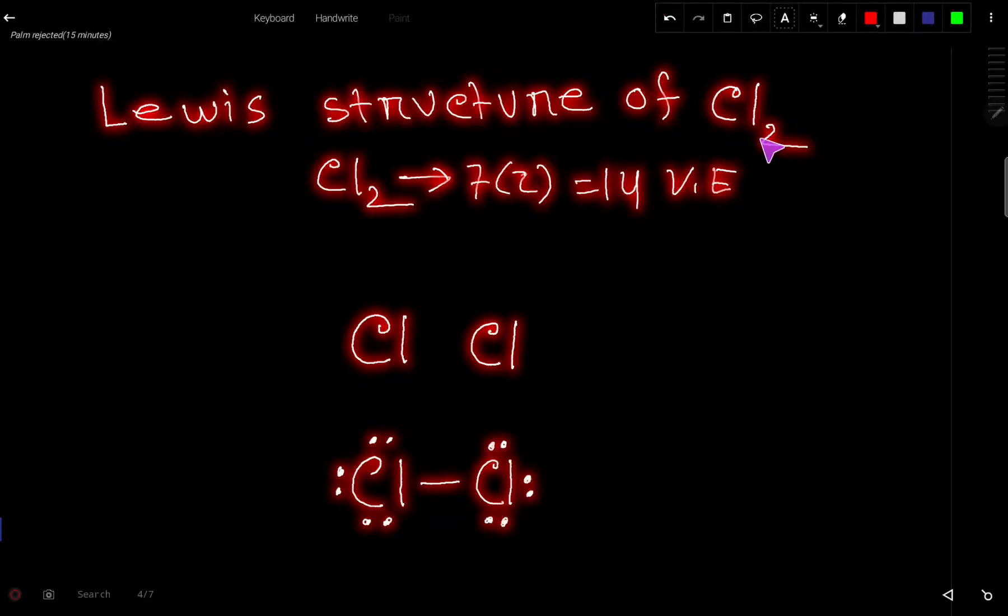Lewis structure of Cl2 chlorine. First, we have to find out the valence electron for Cl2. Chlorine is an element of group 7A, that is why it has seven valence electrons. But here we have two atoms of chlorine, so we have to multiply by two.